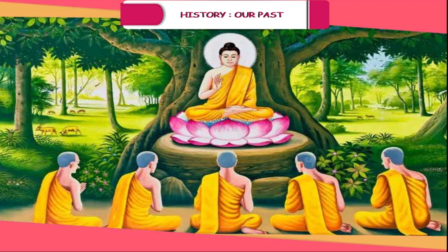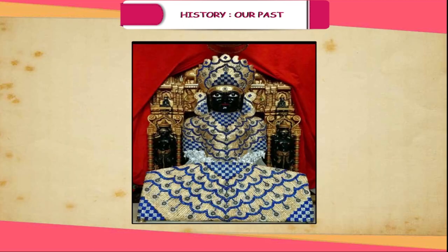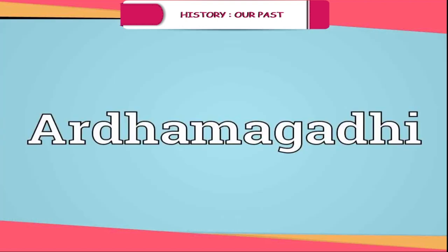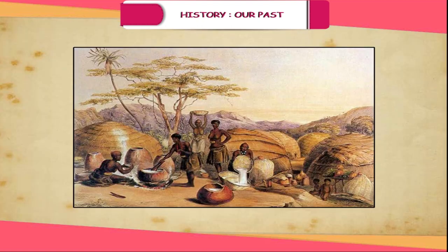The Milindh Paanho presents a philosophical dialogue between Menander, the Greek king, and Nagasena, the Buddhist monk. These texts provide us a lot of information on the social and cultural life of ancient India. Most of the Jain literature is composed in Prakrit language, also known as Ardhamagadhi. The Angas of the Jains elucidate the contemporary society and the political and economic conditions of the time.